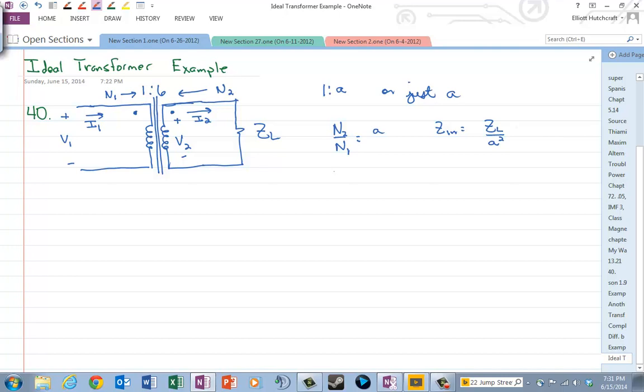So that one's not one you have to worry about, but what you would have to worry about are these equations, and that is V2 over V1 is equal to A, and I2 over I1 is equal to 1 over A.